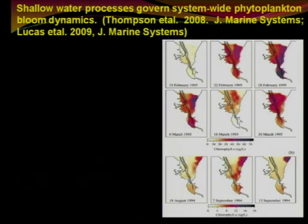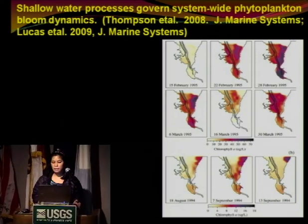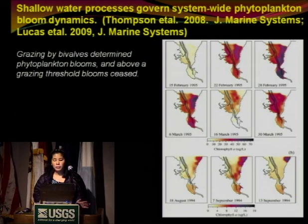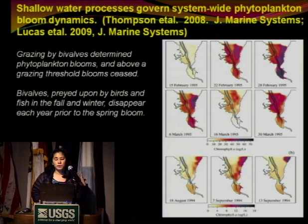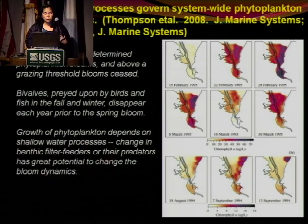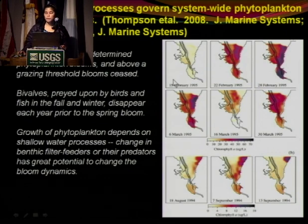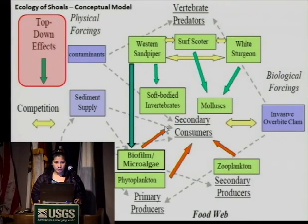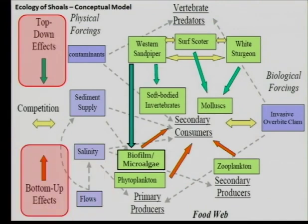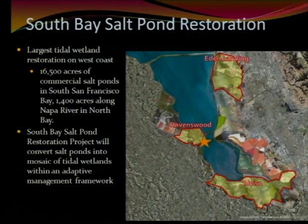Here's an example of top-down effects from a paper by Jan et al. They found that grazing by bivalves determined phytoplankton blooms — above a certain threshold the blooms ceased. When bivalves are preyed upon by birds and fish in fall and winter, they disappear each year, and the growth of phytoplankton depends on shallow water processes and changes in benthic filter feeders. The South Bay Salt Pond Restoration, the largest tidal wetland restoration on the west coast, comprising 16,500 acres of commercial salt ponds in South Bay plus 1,400 acres in North Bay, is a great way to look at these environments.